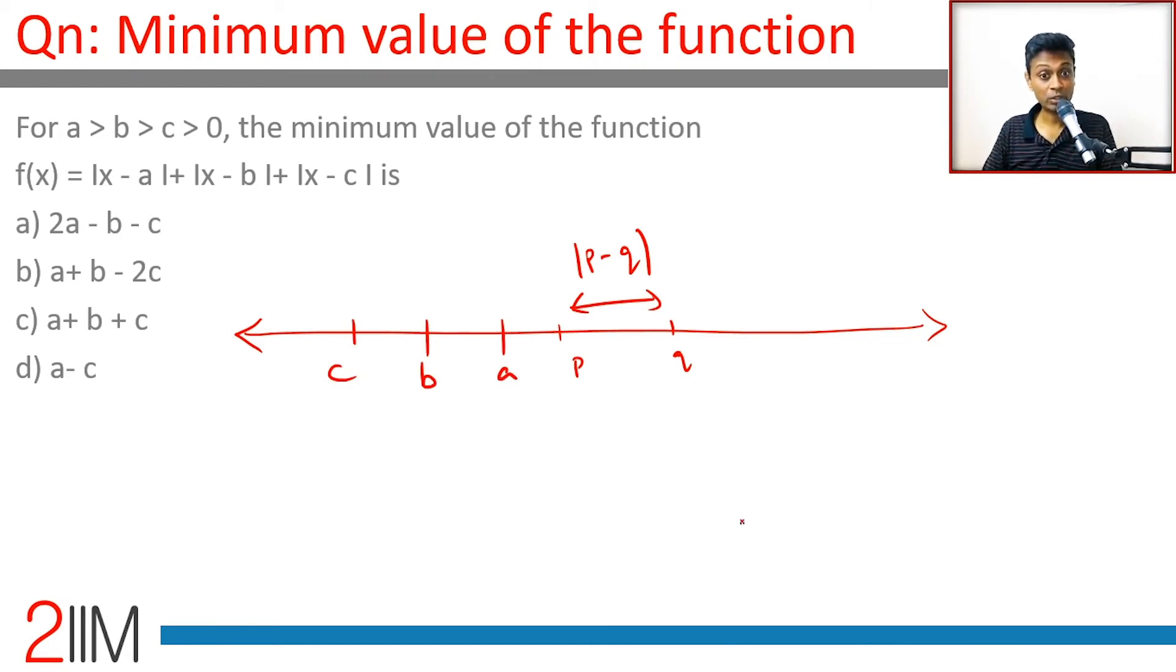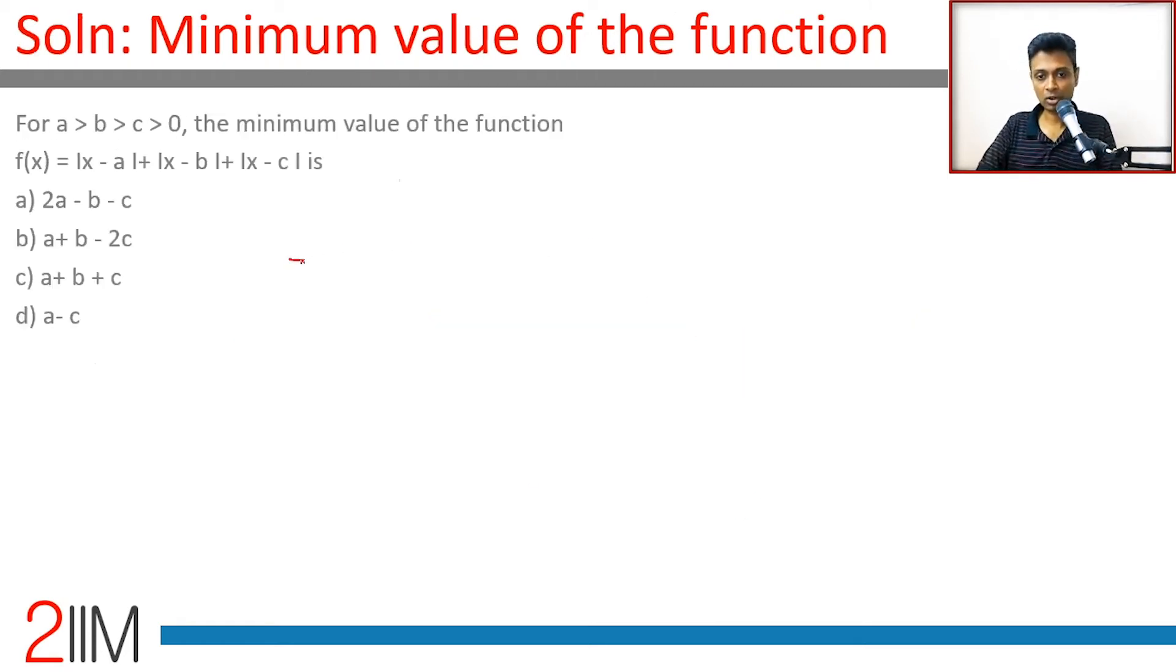Now let's draw this. Let's place c, b, a on the line. We want to find x that minimizes the value. If you put x here, you'll have |x - a|, |x - b|, |x - c|.